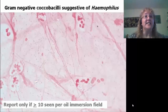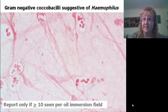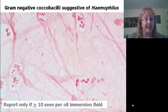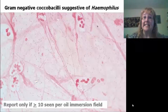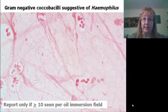The small gram-negative coccobacilli that in a respiratory specimen we know is Haemophilus — so why not report them as gram-negative coccobacilli suggestive of Haemophilus? Again, requiring at least 10 organisms per oil immersion field to report. If we see less than 10, we call it mixed flora.